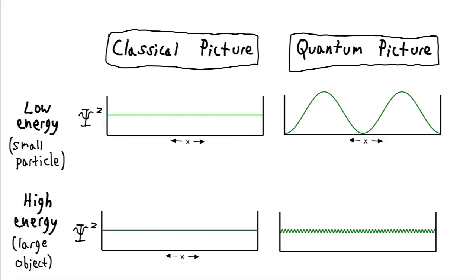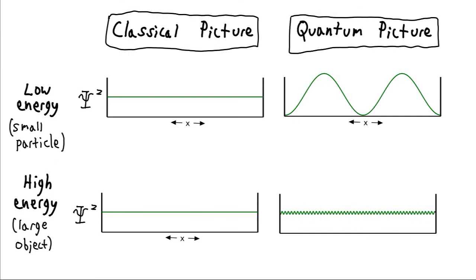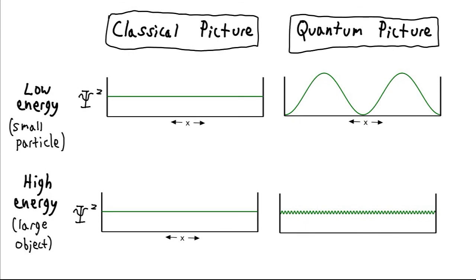And in fact, if we keep increasing the energy, eventually we're not going to be able to distinguish between this case and this case unless we zoom in really, really close. And so for large enough scales, the quantum picture is, as far as we can tell, identical to the classical picture. But in truth, we always have a wave. It's just sometimes we can approximate it with a straight line.